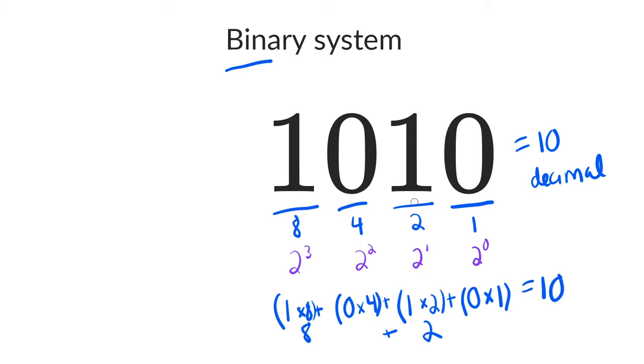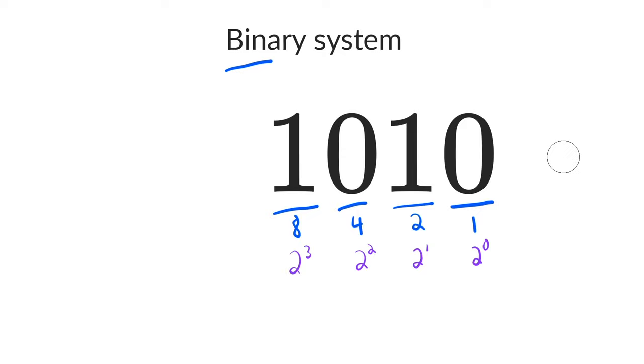Once we know that, we see what digit is in each place, we multiply them together, and we get our final value. Now let's try to convert another binary number to decimal. I'm going to erase this work here, and then for the number, let's just flip the bits.